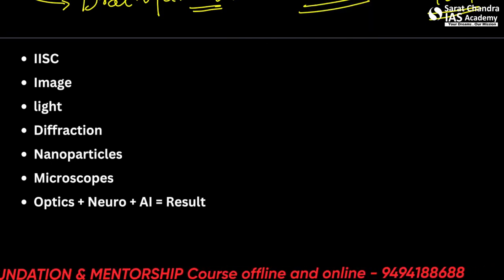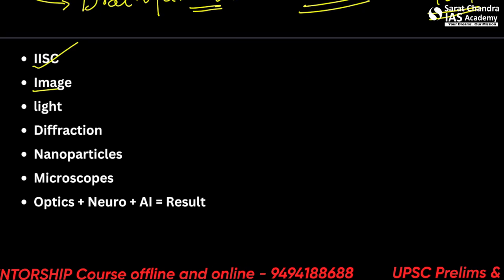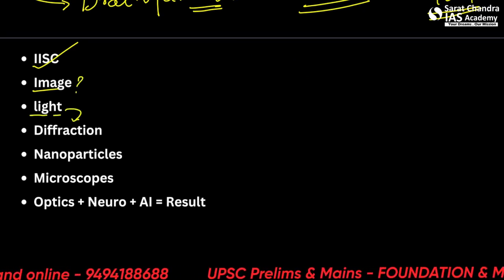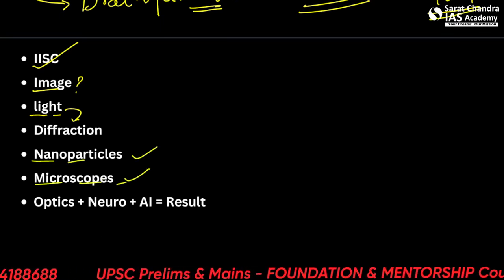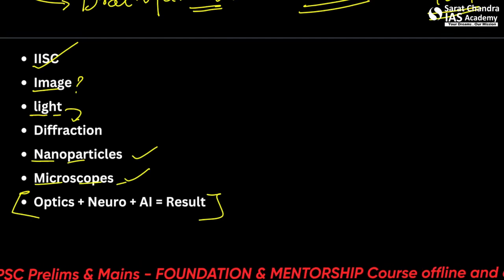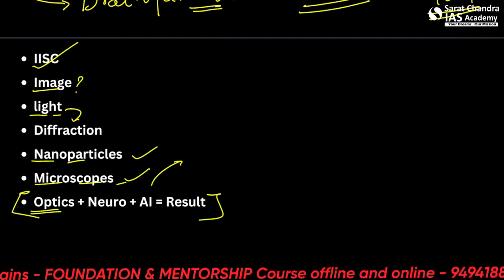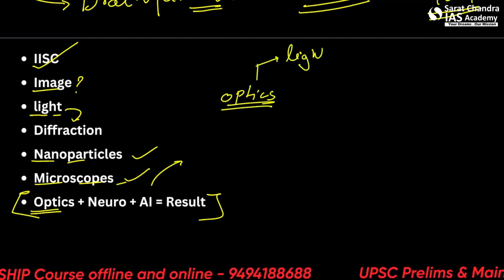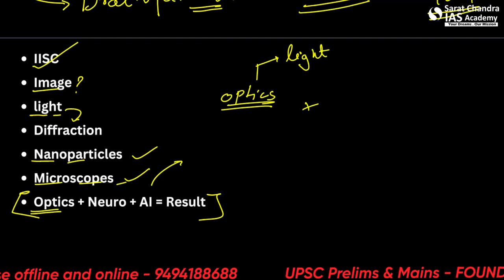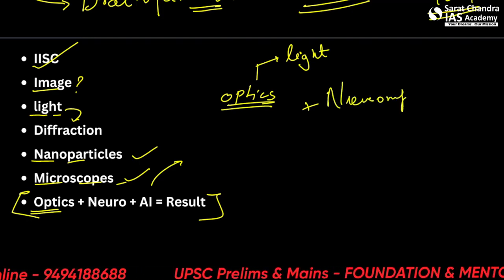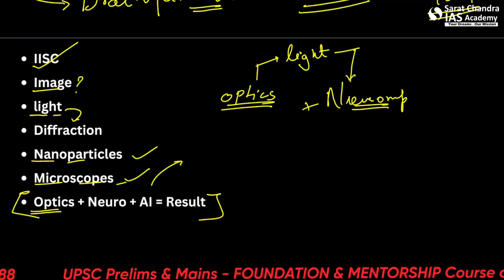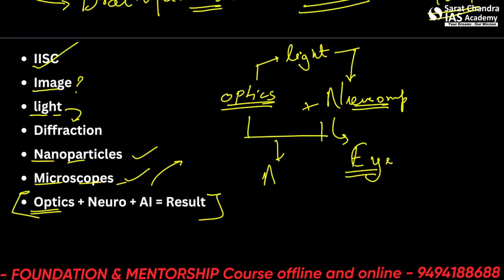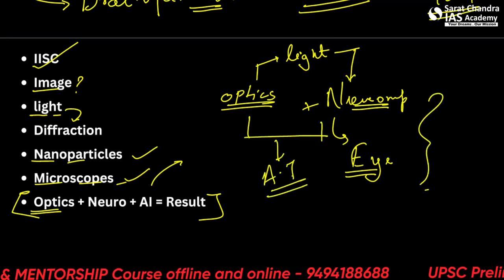From this news, we can extract several topics: what is IISc, what is an image, what is light, the diffraction of light, nanoparticles, microscopes, and the major step forward — combining optics (things that deal with light) plus neuromorphism, meaning replicating brain-like function to create an eye-like structure, all combined through AI.